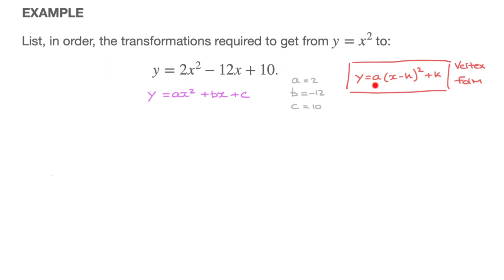Now let's find a, h, and k. First, a. Luckily for us, a is exactly the same a as in our equation — it's the leading coefficient of the parabola, and it's equal to 2. So I can state right away that a is equal to 2.